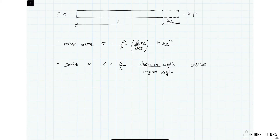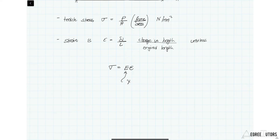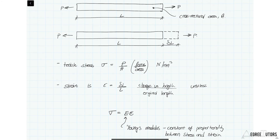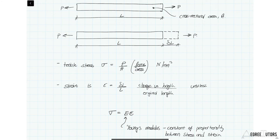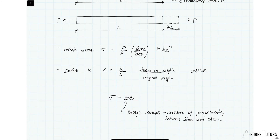The last relationship that ties these together is Young's modulus. Stress for a given material equals Young's modulus times strain: sigma equals E times epsilon. Young's modulus — also called the material modulus — is the constant of proportionality between stress and strain, and it varies for different materials. This idea of a quantity relating stress and strain will come back again and again in this course.